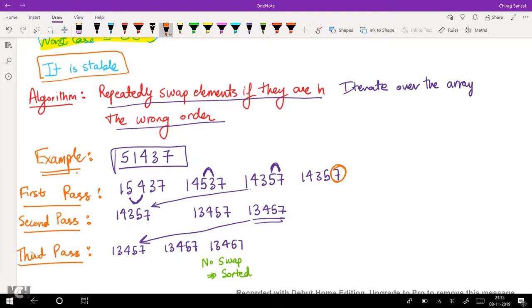So in the next pass the only checking we will do is till this point. We will not check the last two elements, as we know that 7 will already be the largest element, as we keep on swapping the larger one to the right.